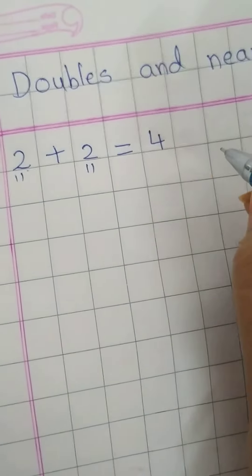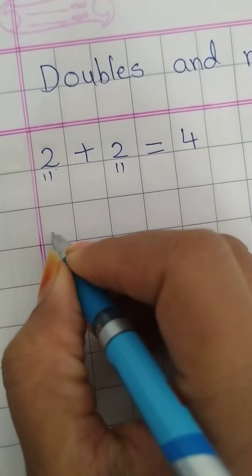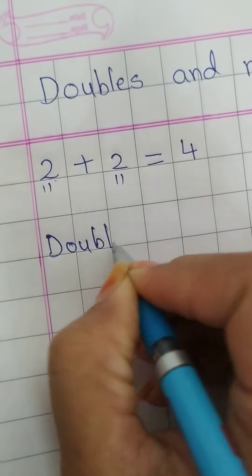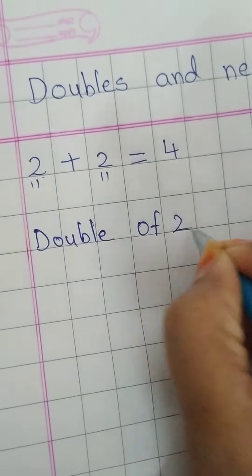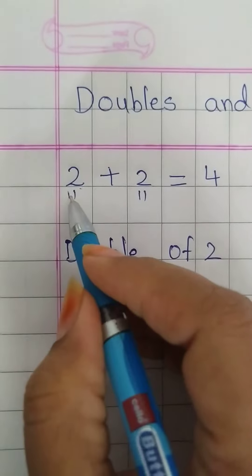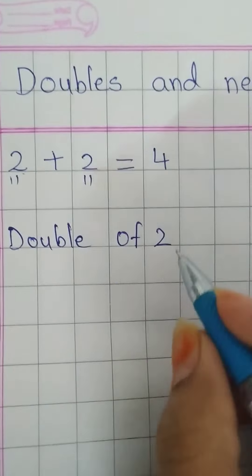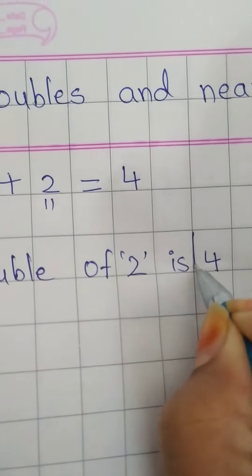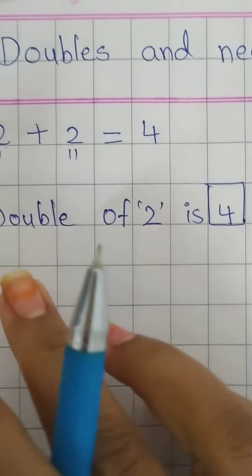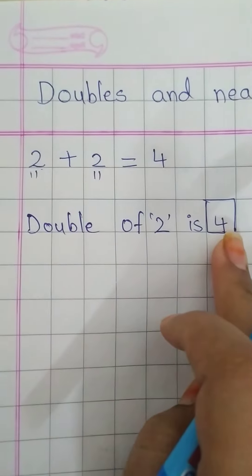We can write it d-o-u-b-l-e double of 2. Which number we double? We double number 2. Double of 2 is 4. Double of 2 is 4.